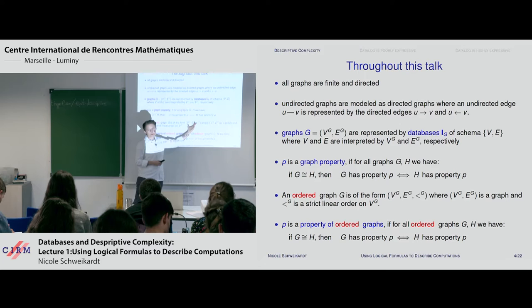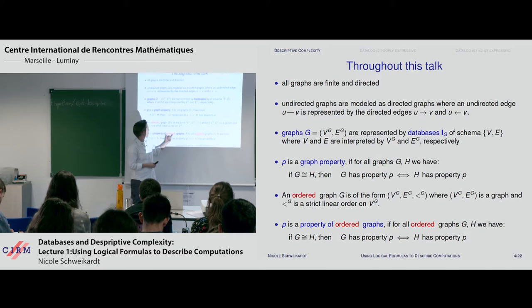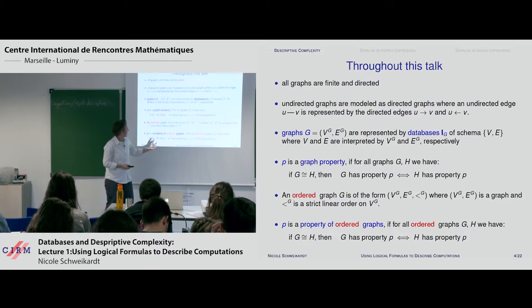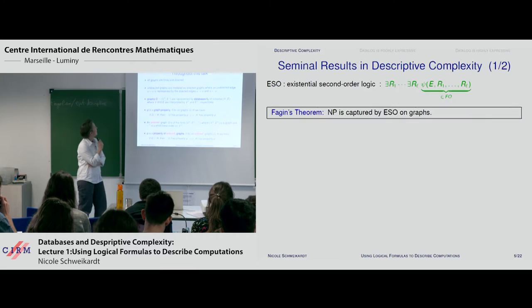At some points I will also talk about properties of ordered graphs. You get an ordered graph — these are relational structures — and you say that if two ordered structures are isomorphic, then the first has this ordered graph property if and only if the second one has. The catch: if you have a linear order on the vertex set, there is no automorphism except the trivial one, so on ordered structures things are often much easier.